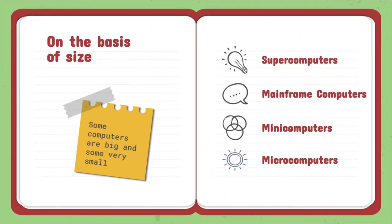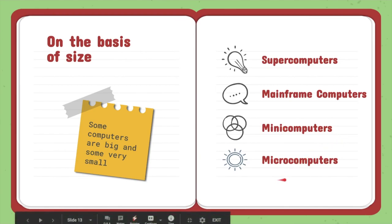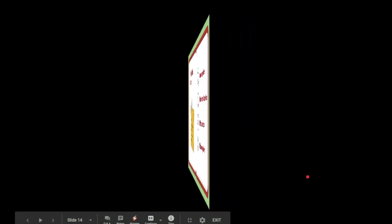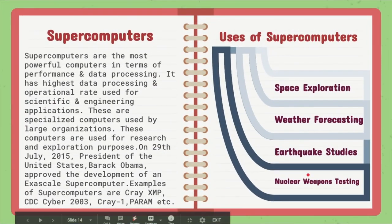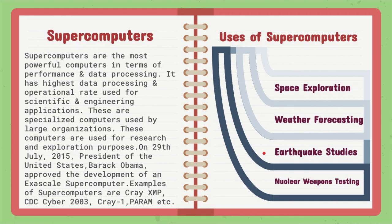Now we will classify computers on the basis of size. On the basis of size, there are four types of computers: supercomputers, mainframe computers, mini computers, and micro computers. Supercomputers are the most powerful computers in terms of performance and data processing.